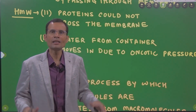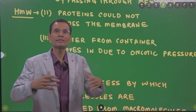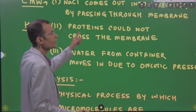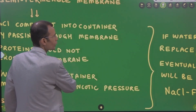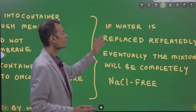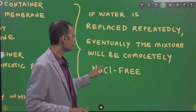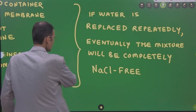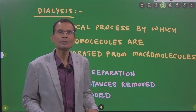This is the case in dialysis. There are substances in the blood — some are required and some are waste products. These two will have to be separated and the waste products eliminated out of the body. Water from the container moves in due to oncotic pressure. If water is replaced repeatedly, because sodium chloride is coming out from the bag into the water, eventually the mixture will be completely free of sodium chloride. That's the basic principle on which dialysis is based.